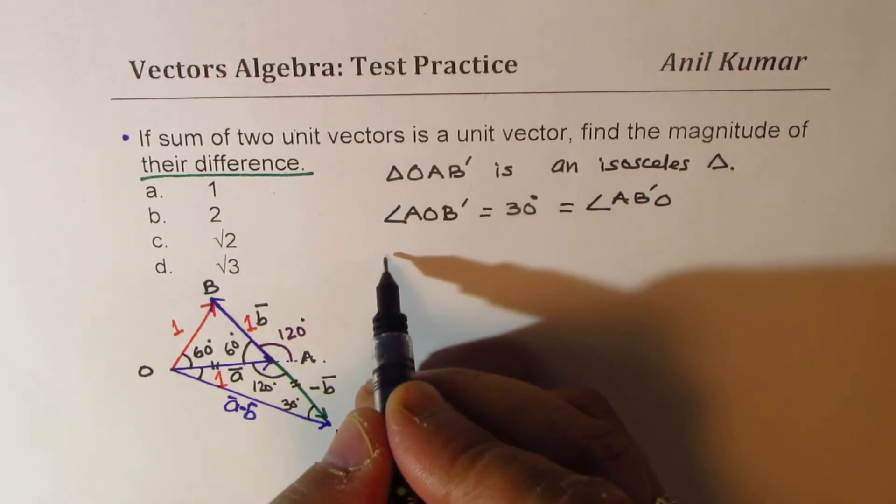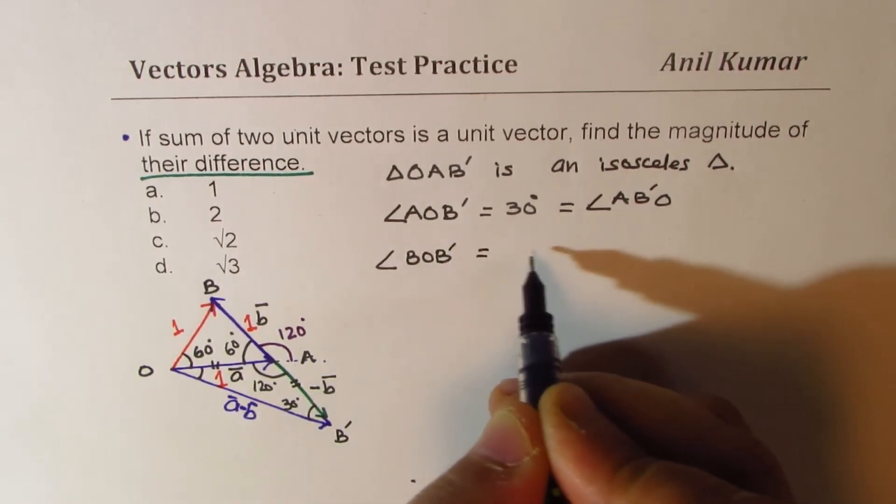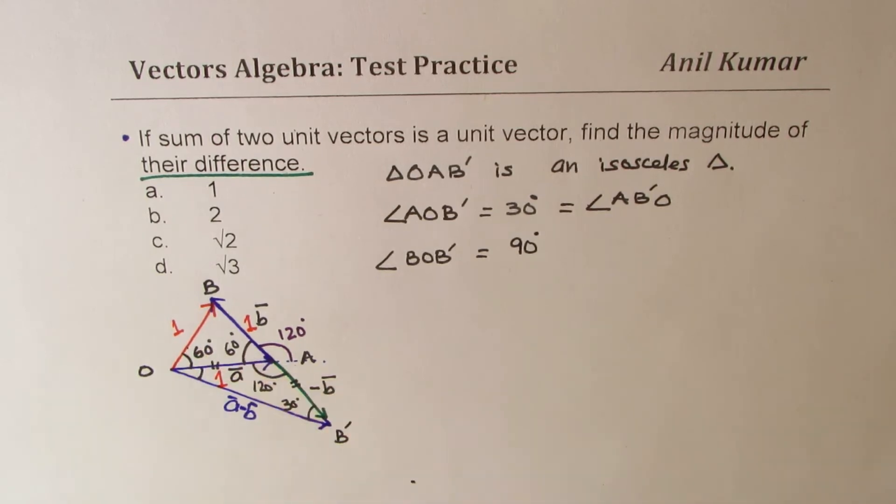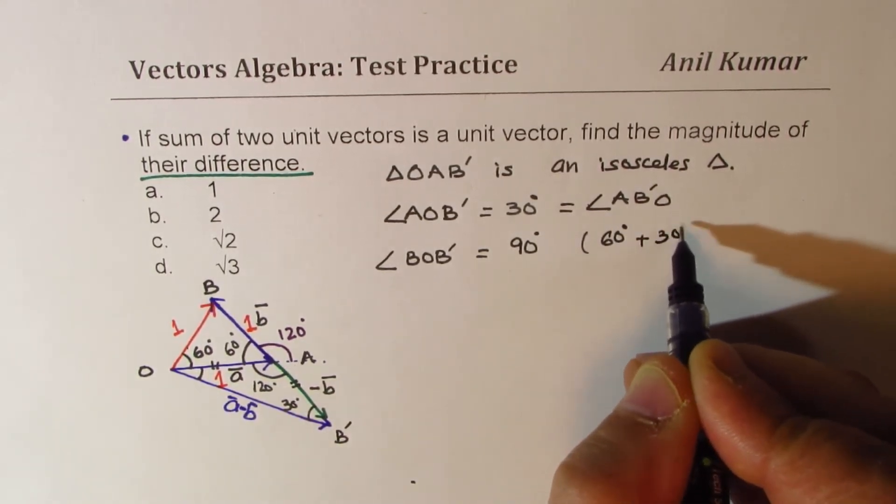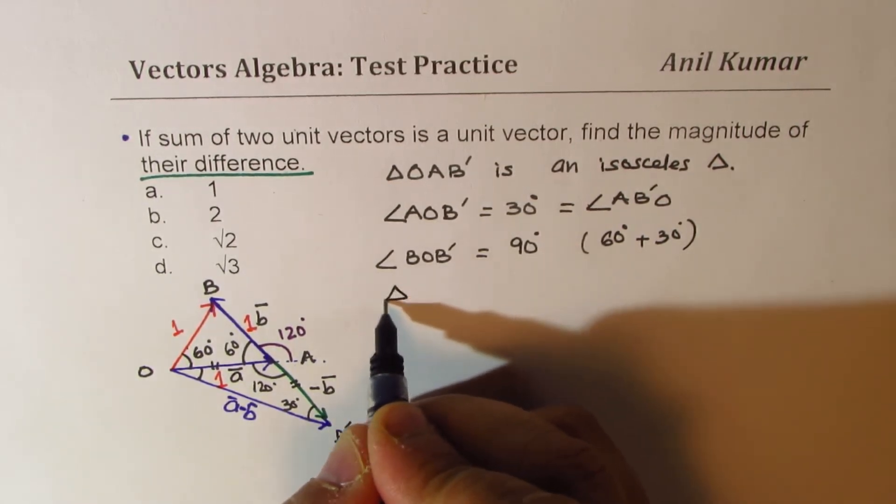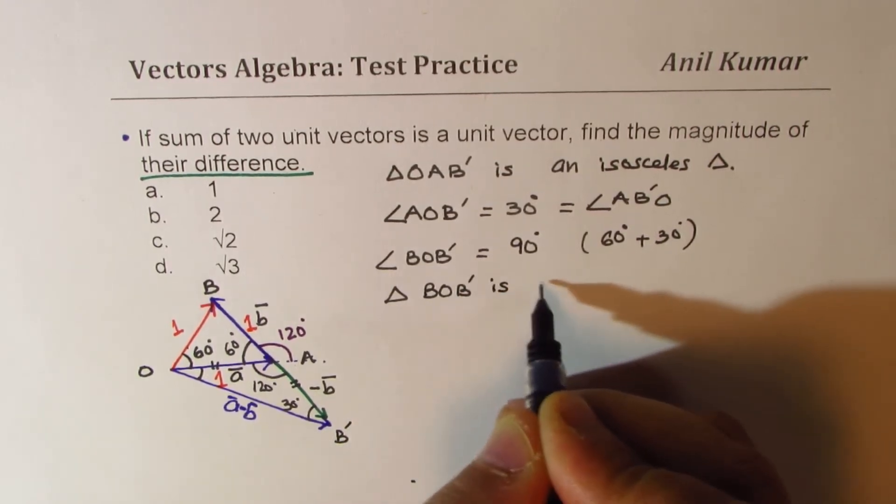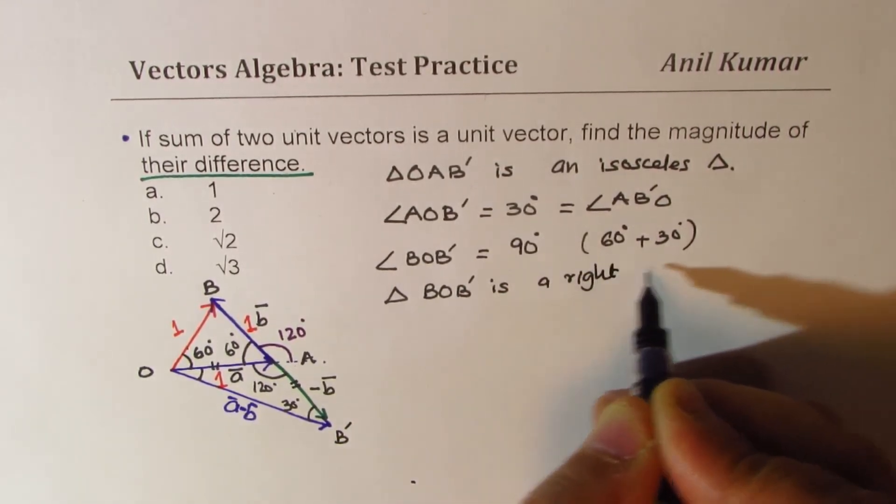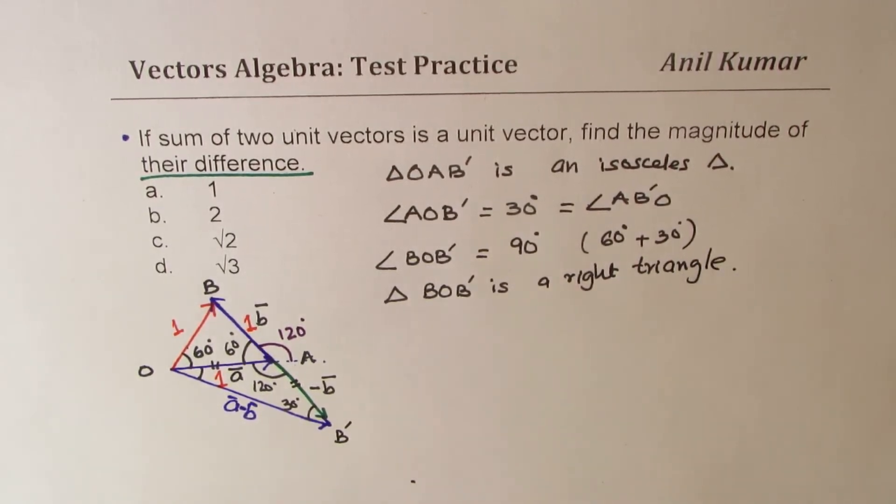So that shows that the angle b, o, b dash is equal to 90 degrees, 60 plus 30. So that means that the triangle b, o, b dash is a right triangle.